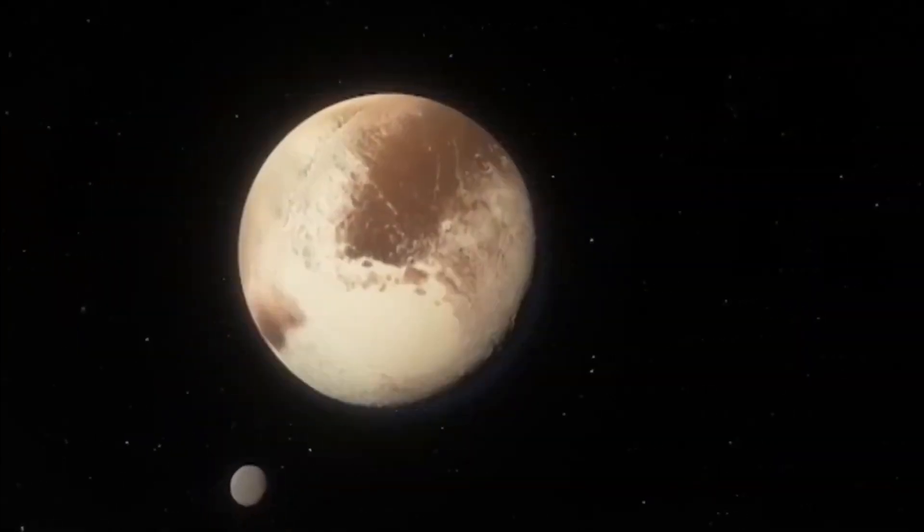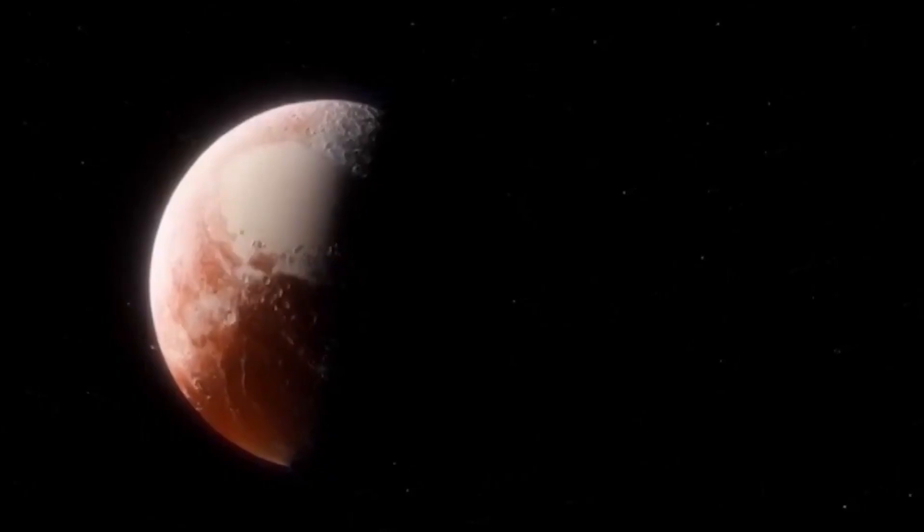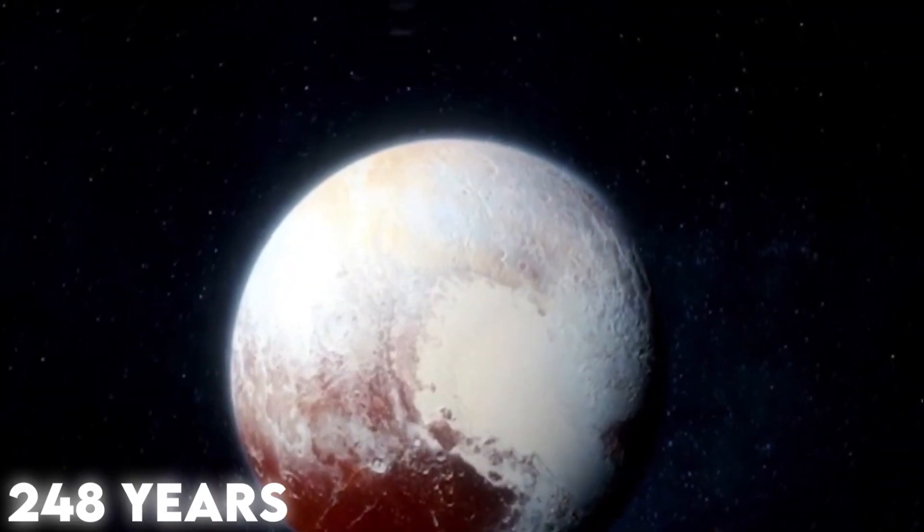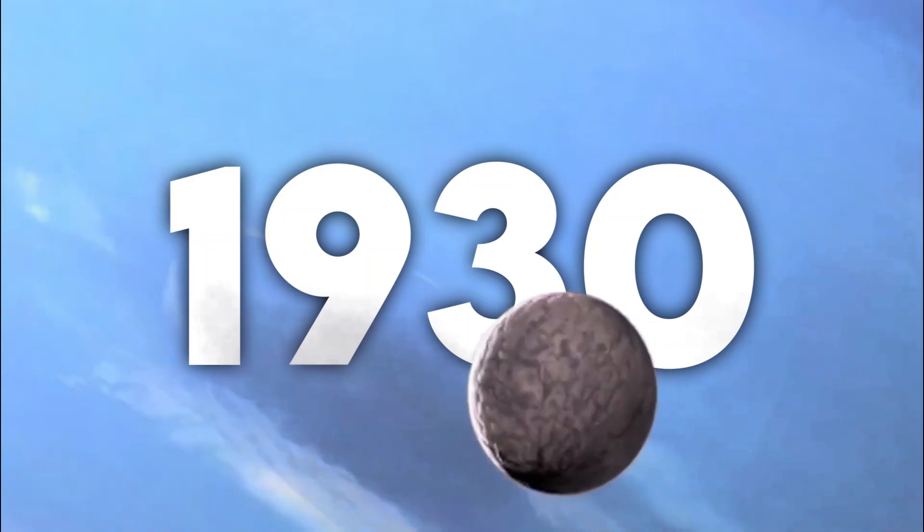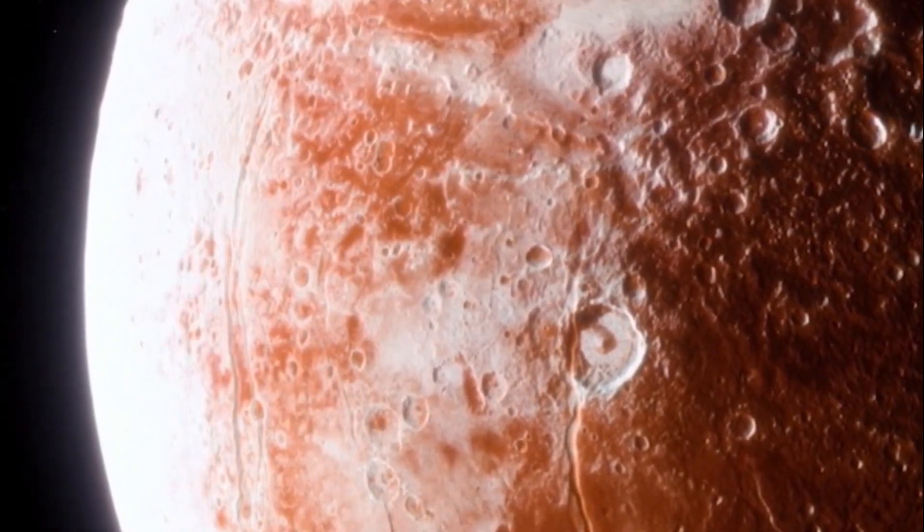Pluto is known for its unique orbit around the Sun, which takes a very long time to complete a single orbit – 248 years. Having been discovered in 1930, it has still not completed its first full revolution yet.